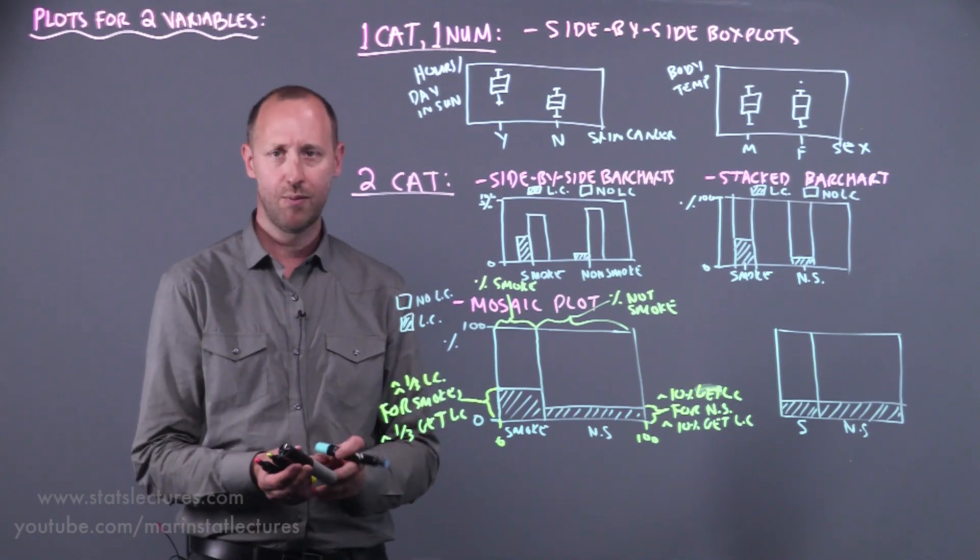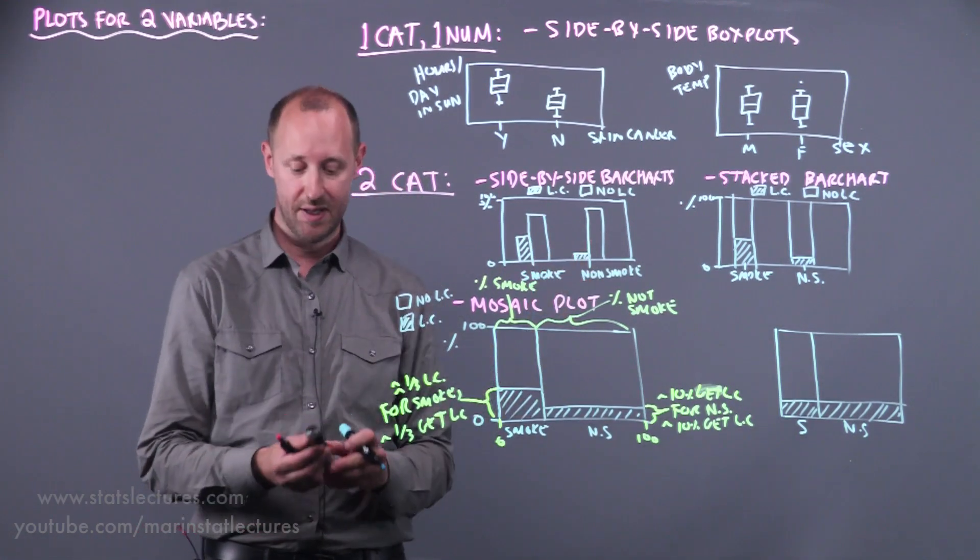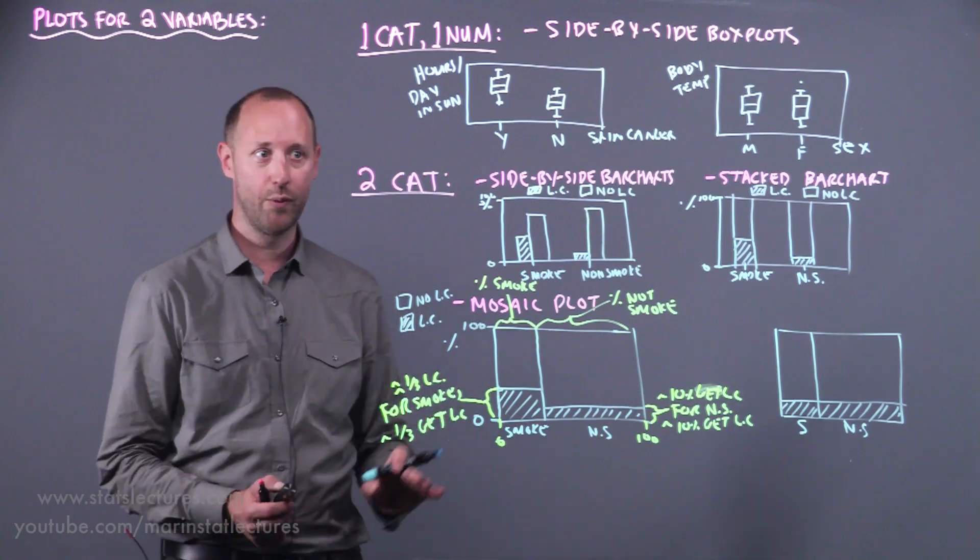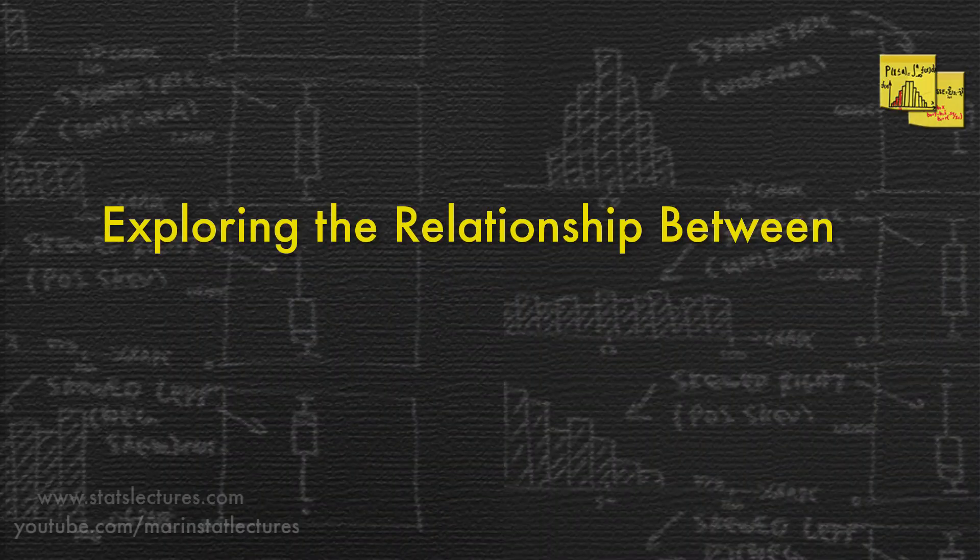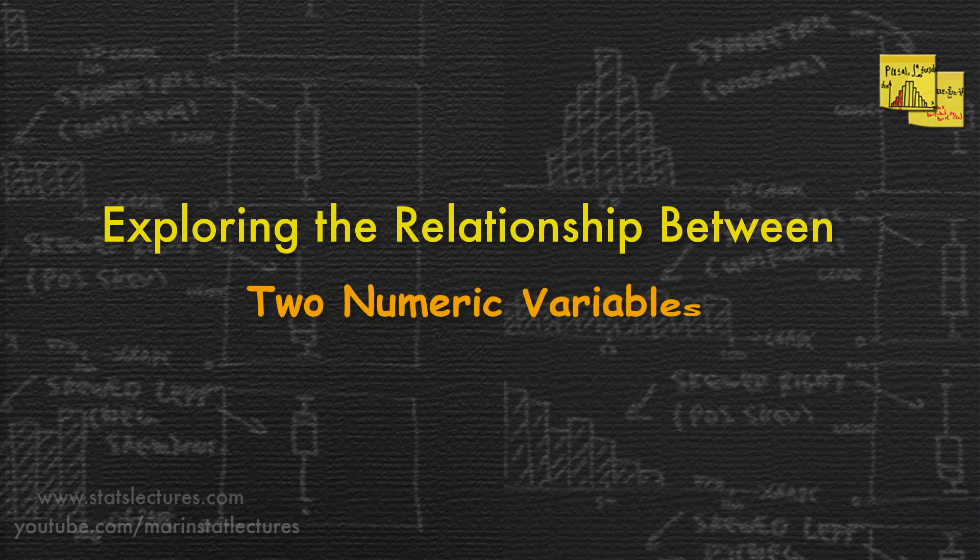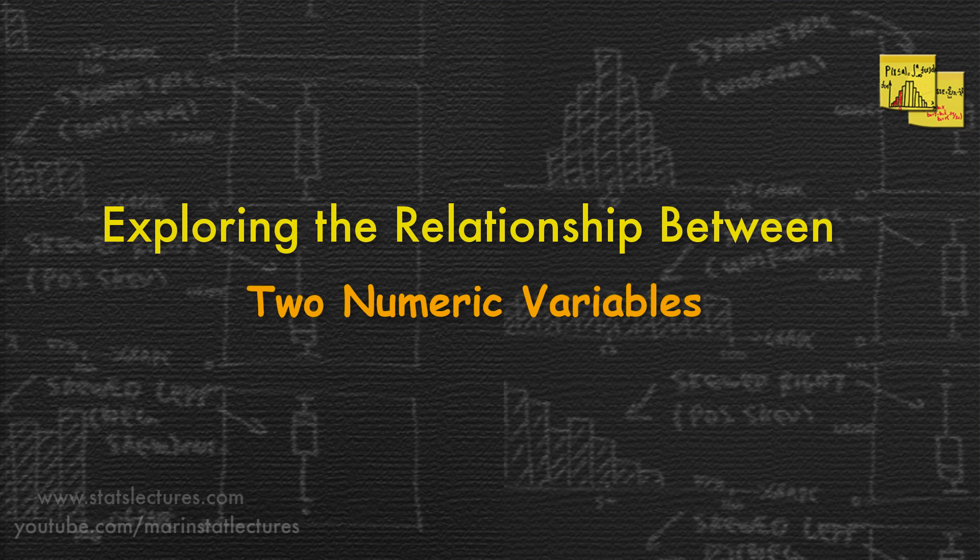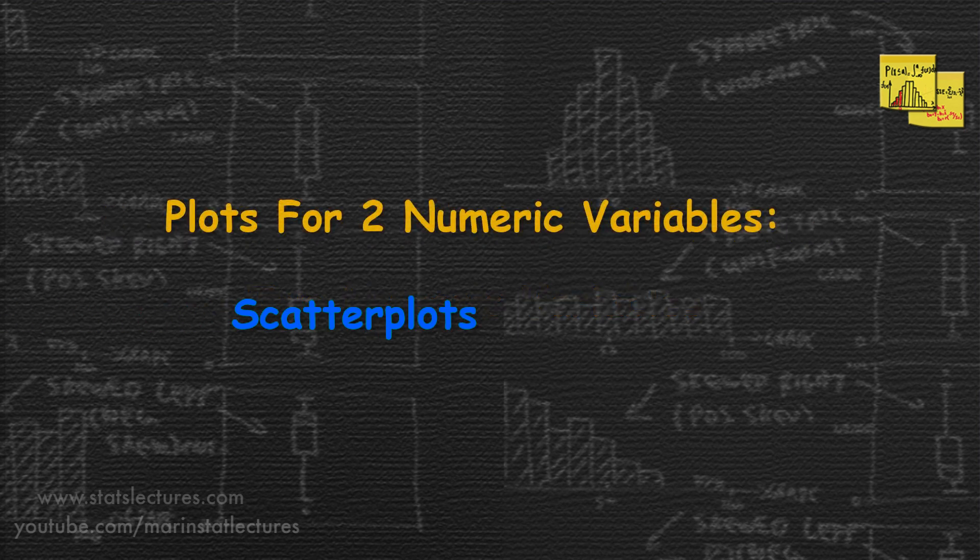So like I said, the mosaic plot, that's my favorite out of these because it conveys the most info in one picture. The final set is talking about describing the relationship between two numeric variables, and to do this we can use a scatter plot, which sometimes gets called an xy plot.